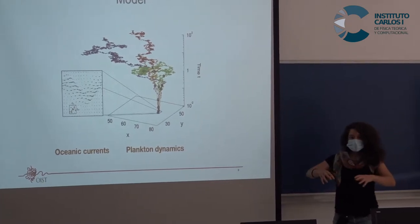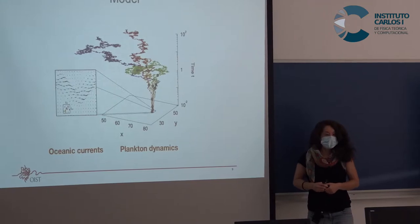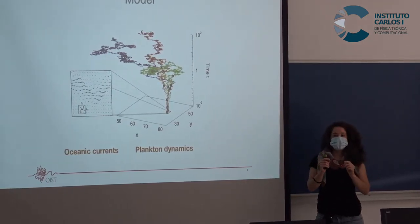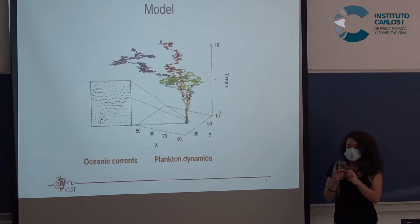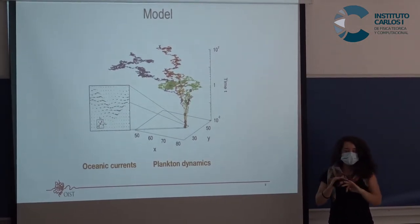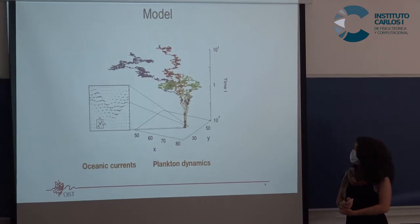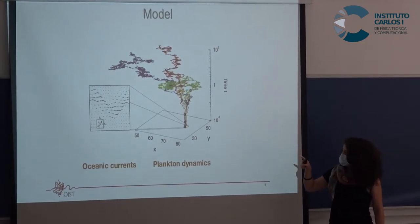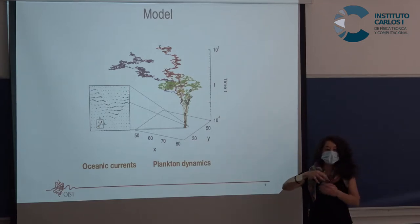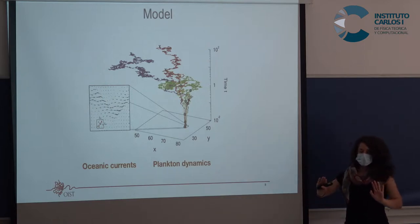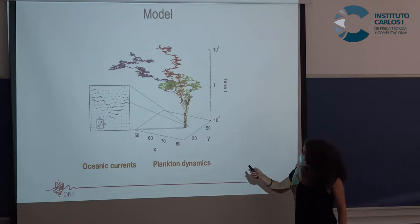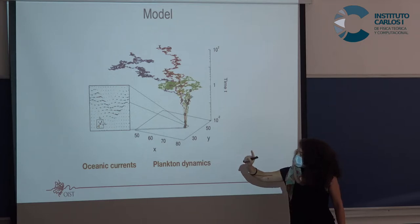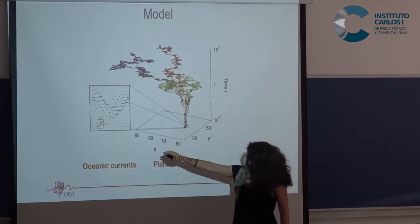In the model, the population dynamics are based on neutral theory, so no individual is better than another — each species doesn't have better fitness than others; everyone has the same chance to die or reproduce independently of fitness. We wanted to focus on the role of the currents, not the dynamics, so we kept that part simple. To see the effect of the currents, we simulate the dynamics for just a sample in the ocean.